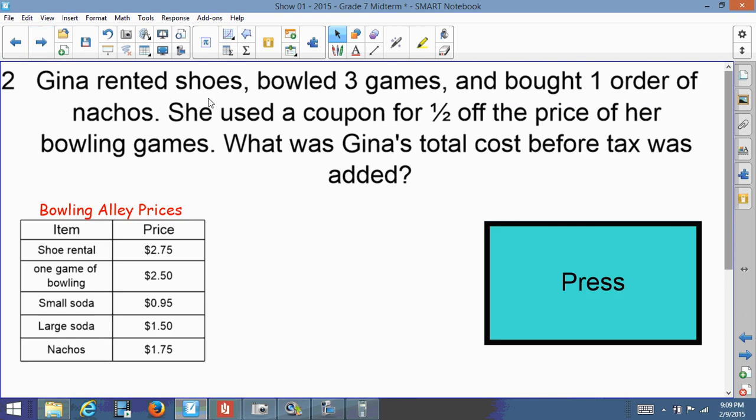Here we have Gina rented some shoes. She bowled three games and bought one order of nachos. She used a coupon for half off the price of her bowling games. What was Gina's total cost before tax was added? Let's go over what Gina did. First thing, she bought some shoes.